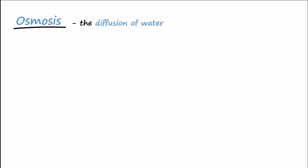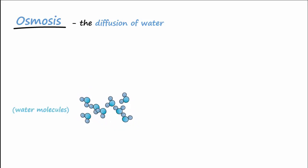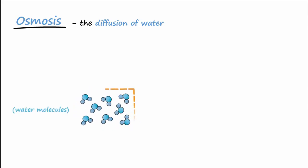What about the term osmosis? Simply put, osmosis is the diffusion of water. As all molecules do, water also follows the law of diffusion and goes from a region of high concentration to a region of low concentration.